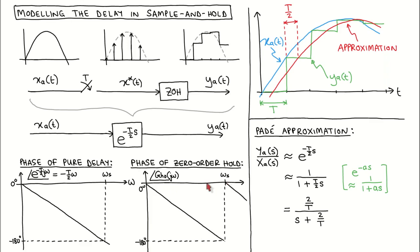Note that we use a linear frequency axis instead of the more usual logarithmic frequency axis. The phase shift of the half-sampling period delay also decreases linearly from 0 to minus 180 degrees between 0 radians per second and the sampling frequency. The half-sampling period delay therefore better captures the phase response of the sample and hold than the unity gain.